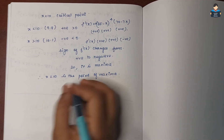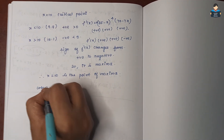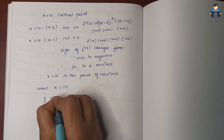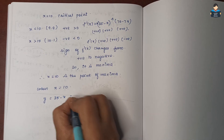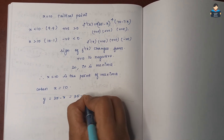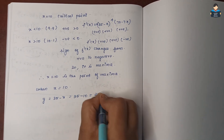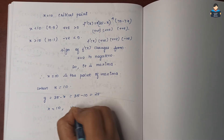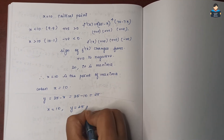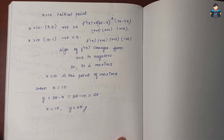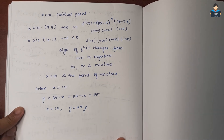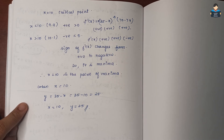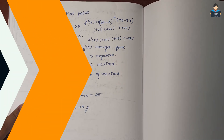When x = 10, y = 35 minus 10 = 25. So the two numbers are x = 10 and y = 25, giving maximum x²y⁵. With this, we complete 3 sums in this video. In the next video we will see the next set of sums. Please like, share, and subscribe. Thank you.